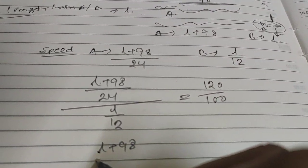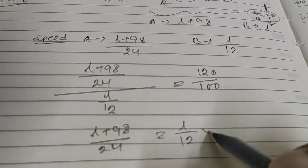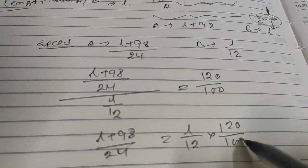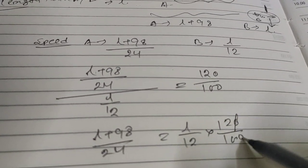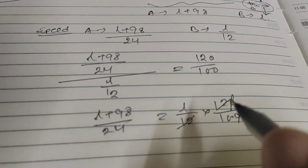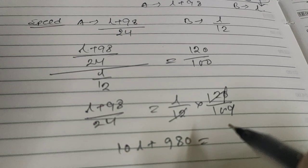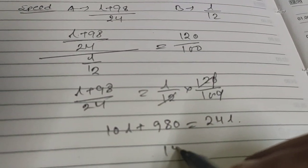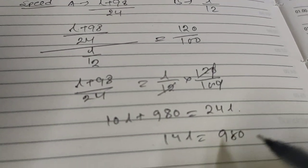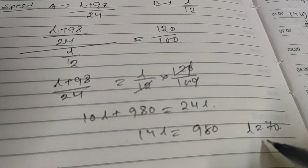So (L plus 98) by 24 equals L by 12 into 120 by 100. This simplifies to 10L plus 980 equals 24L. So 14L equals 980, which means L equals 70.